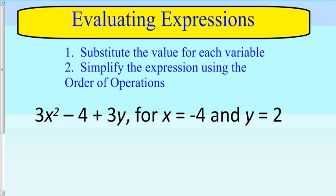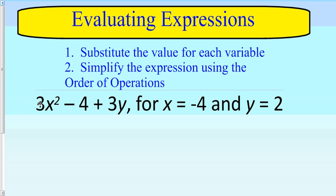Finally, let's look at one more example. I've got 3x squared minus 4 plus 3y. x equals negative 4 and y equals 2. I'll substitute again as the first step.